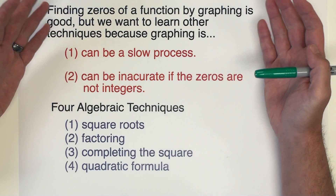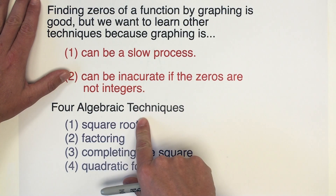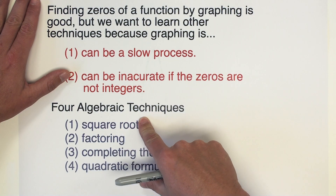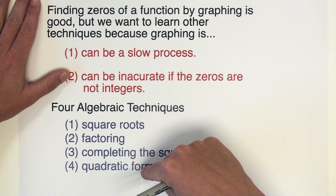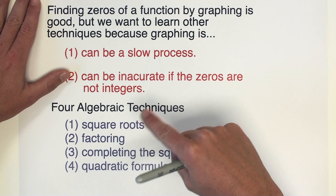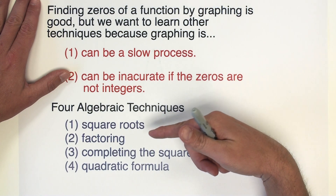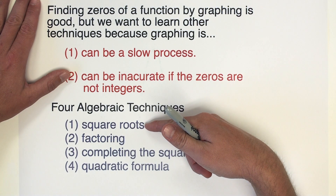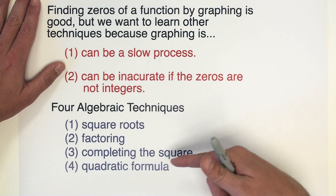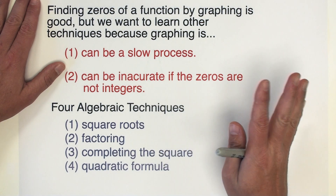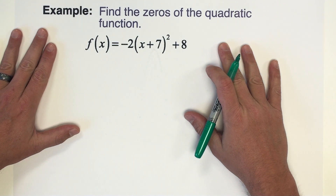There are four algebraic techniques we are going to go over, but not all in this video — each gets its own separate video. The subject of this video, besides what zeros are and finding them by graphing, is the square root technique. In subsequent videos we'll also look at factoring, completing the square, and the quadratic formula, but for now we're just going to focus on square roots.